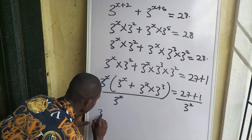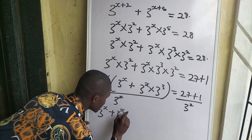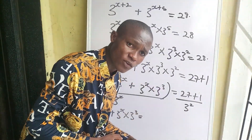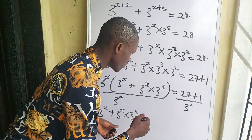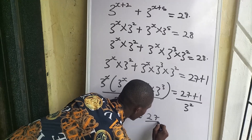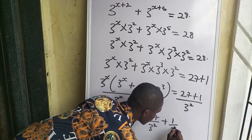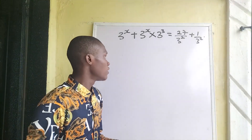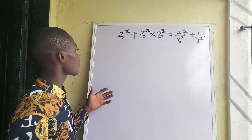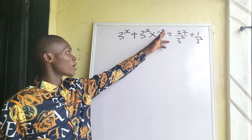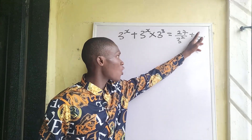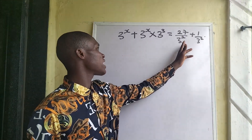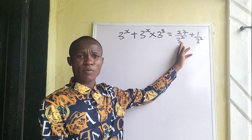We are left with 3 to the power of x plus 3 to the power of x times 3 to the power of 3, equal to 27 over 3 to the power of 2 plus 1 over 3 to the power of 2. Since 3 to the power of 2 is 9, we can write this as 3 to the power of x plus 3 to the power of x times 3 to the power of 3, equals 27 over 9 plus 1 over 9.